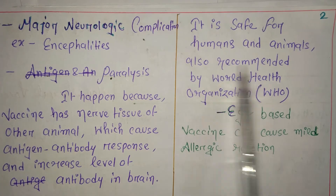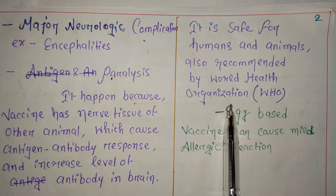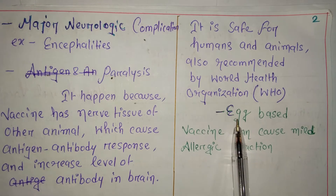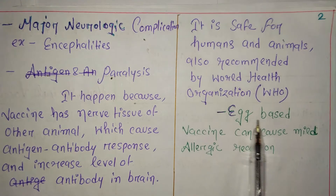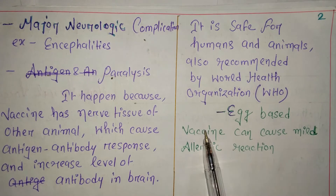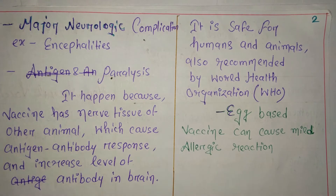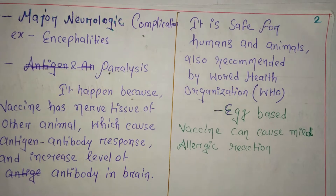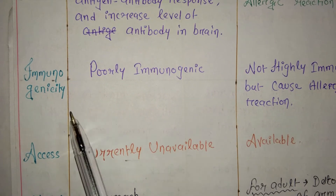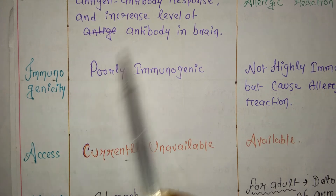The side effect of non-neural vaccine is that it is safe for humans and animals, and it is recommended by the World Health Organization. However, an exception is the egg-based vaccine, which can cause mild allergic reactions.